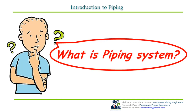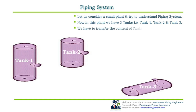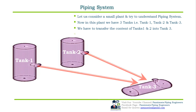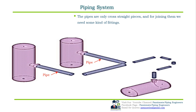The second topic is: what is a piping system? Let us consider a small demo plant and try to understand the piping system. In this plant we have three tanks — Tank 1, Tank 2, and Tank 3. We have to transfer the content of Tank 1 and Tank 2 into Tank 3. After placing all the tanks, we need to connect them, and to do so we need some pipes. Pipes are only straight cross-sectional pieces.